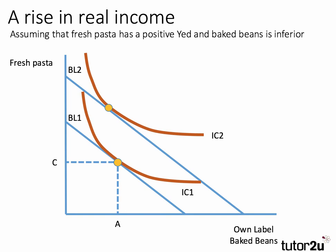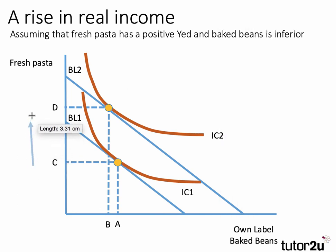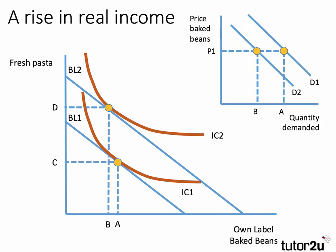What does that mean for quantity? The consumer buys a lot more pasta but buys less own label baked beans. The increase in pasta consumed is shown by the arrow, but there's actually a lower quantity of own label baked beans purchased. This suggests that pasta is a normal good with a strong income elasticity of demand, whereas baked beans is an inferior good with a negative income elasticity of demand.